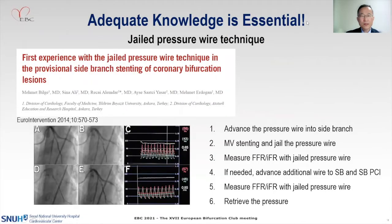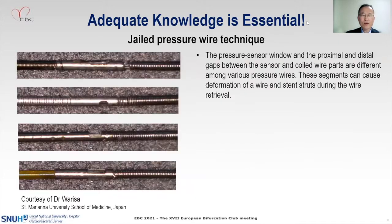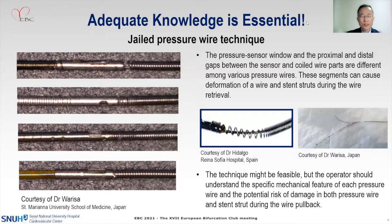We also describe the possibility and limitations of the jailed pressure wire technique. Several papers have reported the feasibility of jailing a side branch pressure wire within the stent and measuring the jailed side branch FFR with that pressure wire, making the procedure more convenient and potentially safe. However, we must understand that the pressure sensor window and gaps between the sensor and wire differ among branches. There are reports of damage to both the pressure wire and the stent during wire retrieval due to these different structures. Our recommendation is that this technique can be feasible, but operators must understand the different mechanical features of the pressure wire and the potential risk of damaging the wire or stent during pullback.